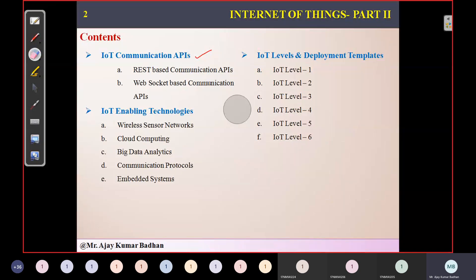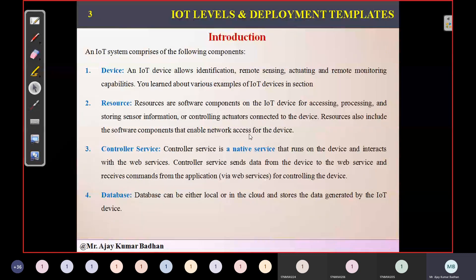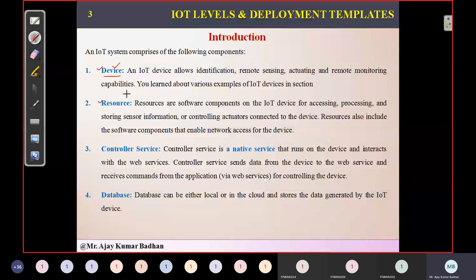We already discussed this. First, we have something called a device. Devices are nothing but the physical objects we deploy in an environment to get information, to read information from the environment, and based on that, perform certain operations. Examples include your temperature sensor, humidity sensor, DHT — that is the humidity and temperature sensor — accelerometer sensor, and gyroscope sensors.